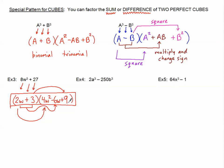Some people look at this trinomial and say, can't I factor this more? That's a good thought, but this will not factor more unless we missed a GCF to begin with — and we didn't. This will not factor anymore. This is our final answer.